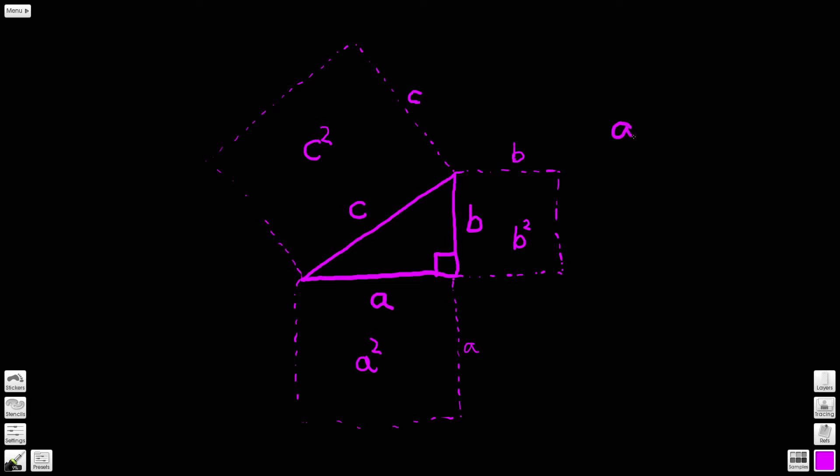Now what Pythagoras's theorem states is that if we take the area a squared, so if we take this area here, a squared, and if we add it to the area b squared, we will end up with the area c squared. So this is Pythagoras's theorem condensed into mathematical form: a squared plus b squared equals c squared. And it is quite a thing of beauty.